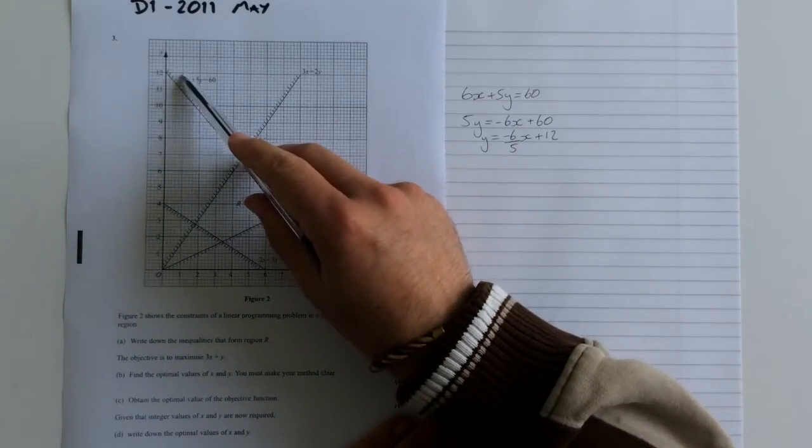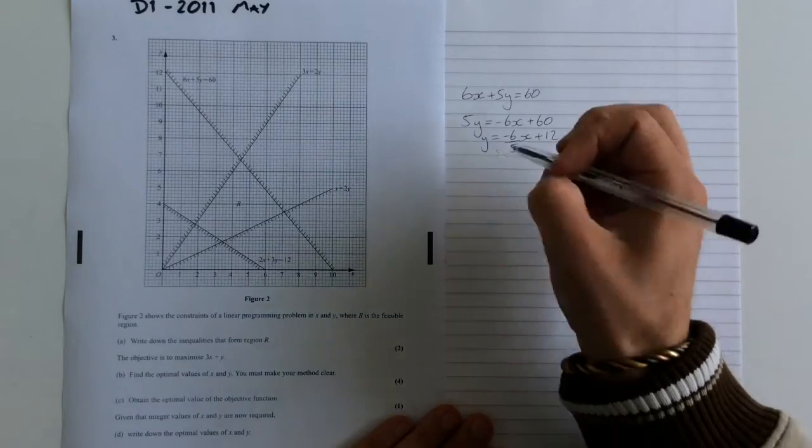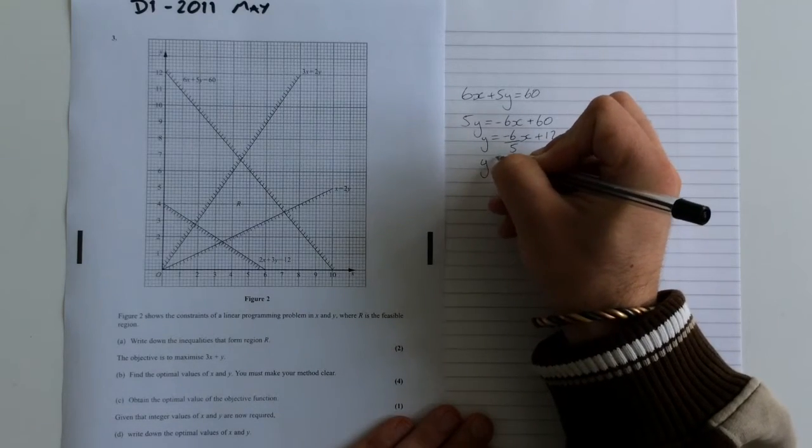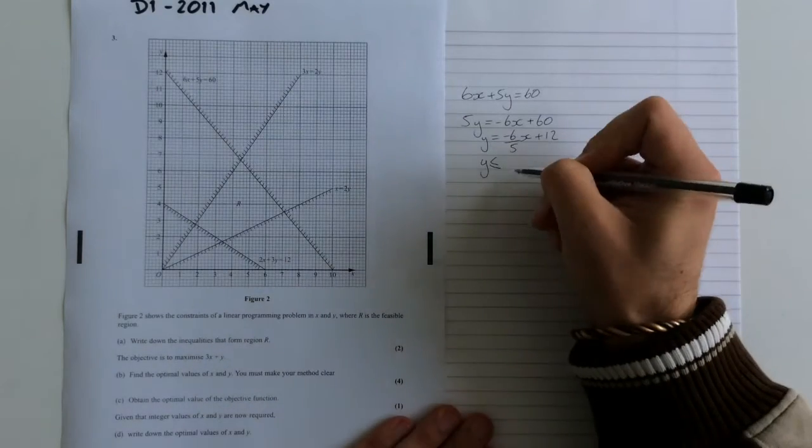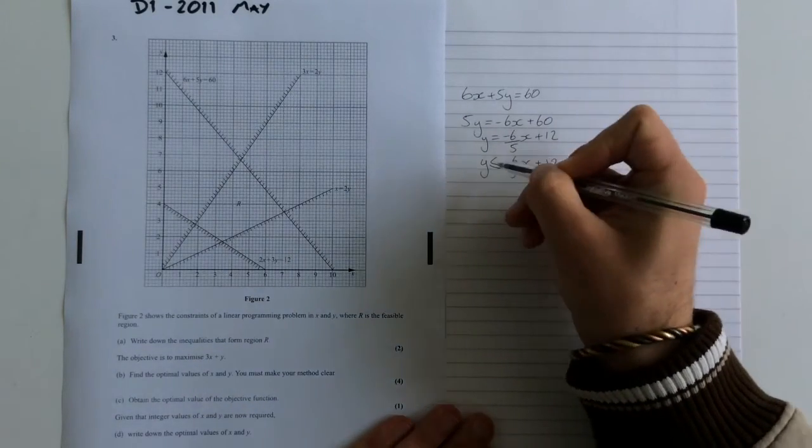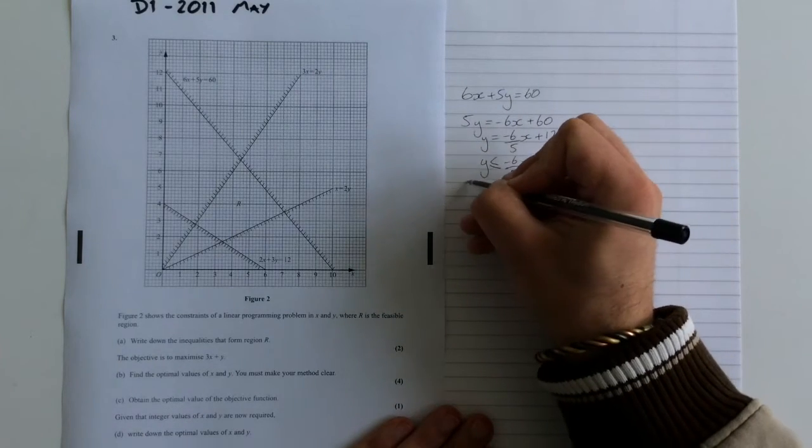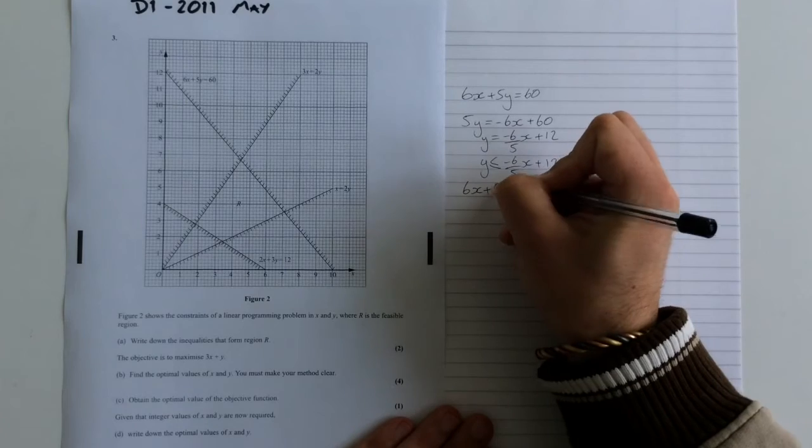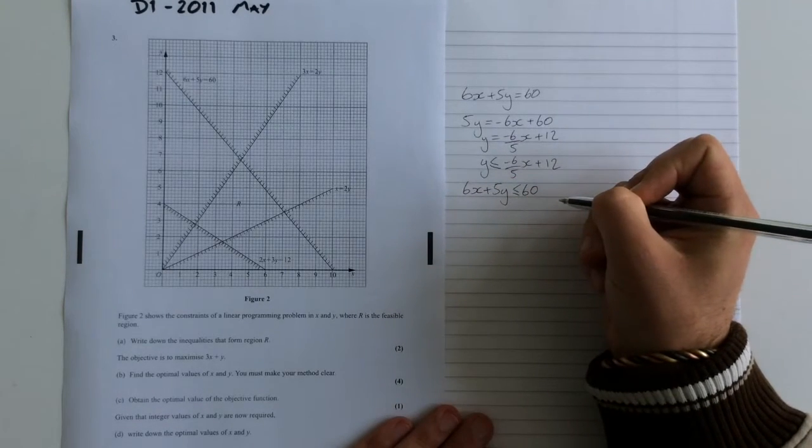Now we can think about this a little bit more. We know from this we've got it shaded above. We want the stuff below. So if we want it below, that's less than. So we want y is less than or equal to, because this is not a dotted line, minus 6 over 5x plus 12. Now you can leave it in that format or you can go back to the original one, which of course would then mean we had 6x plus 5y is less than or equal to 60. So there is our constraint.